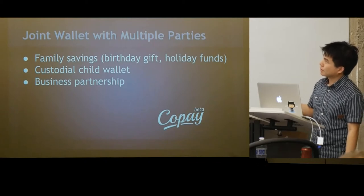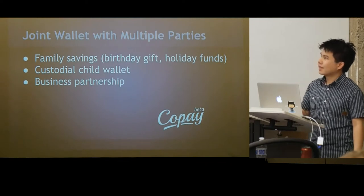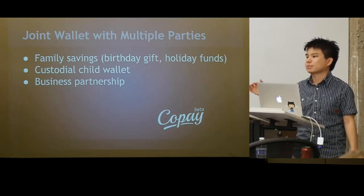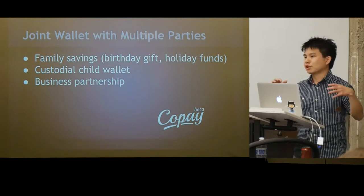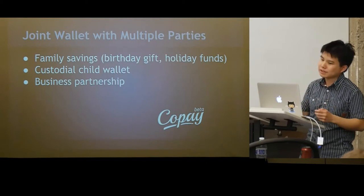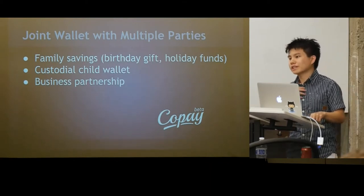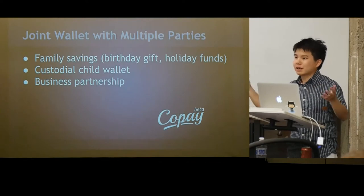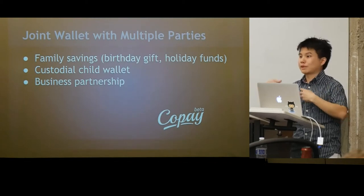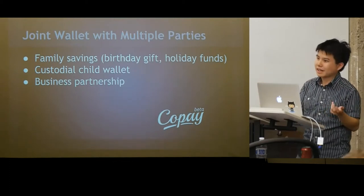With traditional multisig, you can't easily change the signers on a wallet, since the address is the hash of the pubkeys. If you want to change the number of approvers, you need a new multisig address. Also, all signers are equally important — so if you put your coins in a 2-of-3 with two friends, and they collude with each other, you could lose your funds. Be careful about how you structure who holds keys.